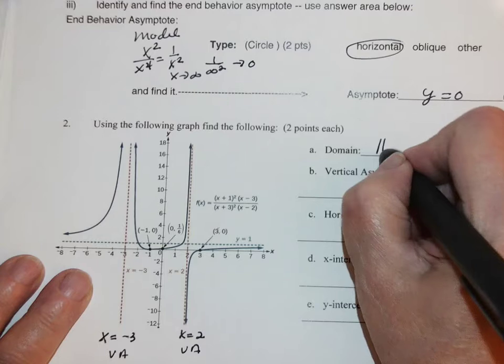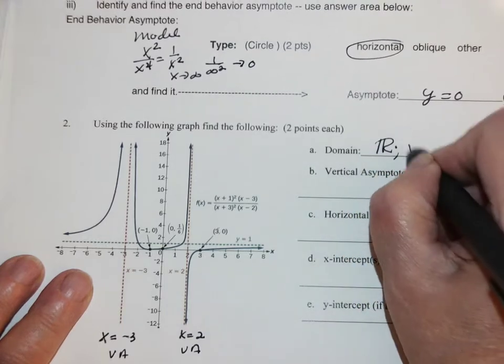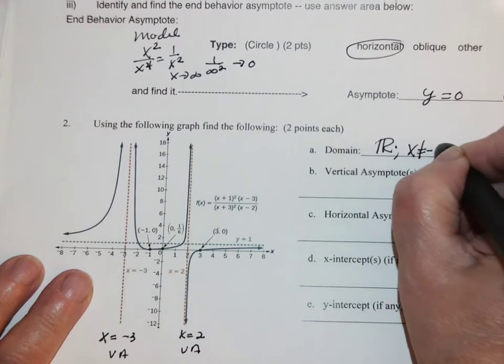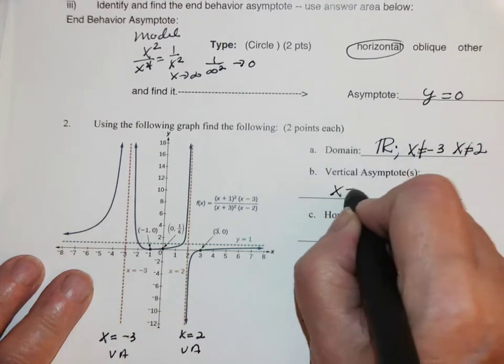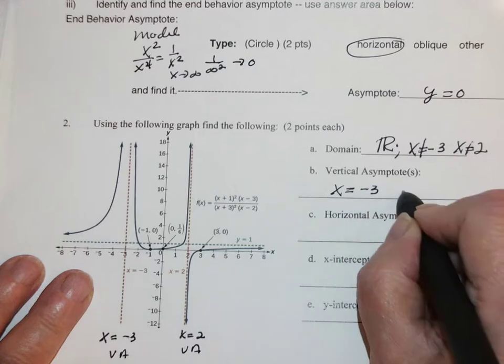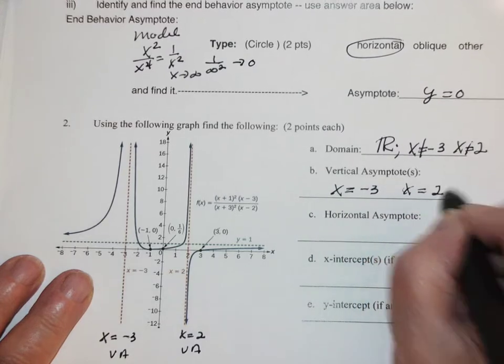So that means the domain is all real numbers. x can't be negative 3, x can't be positive 2, with the VAs being x equal negative 3, x equal positive 2.